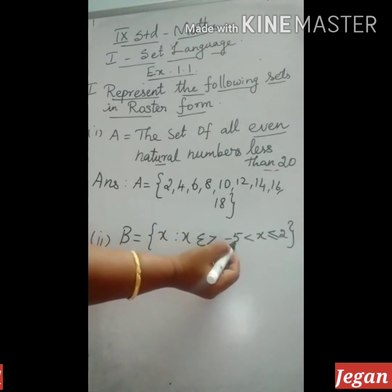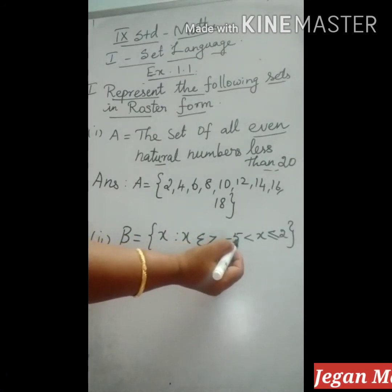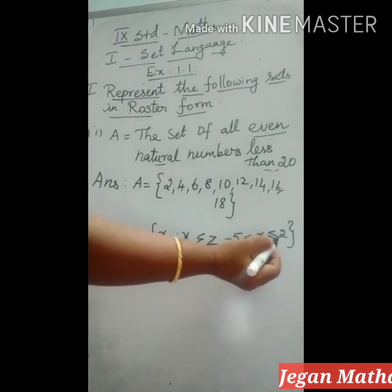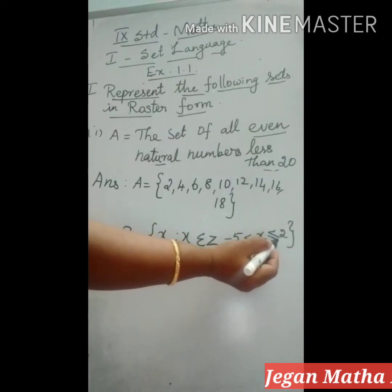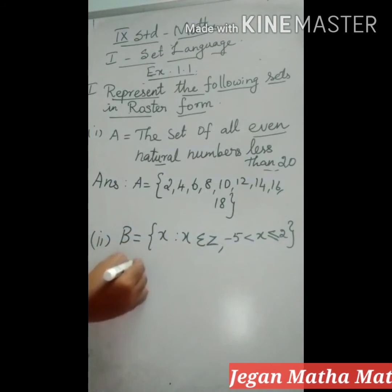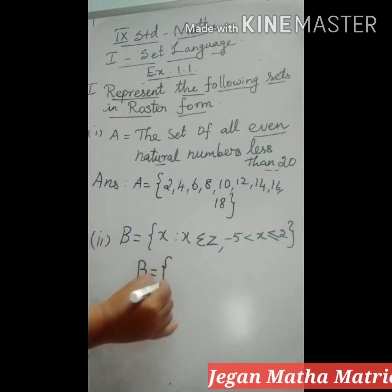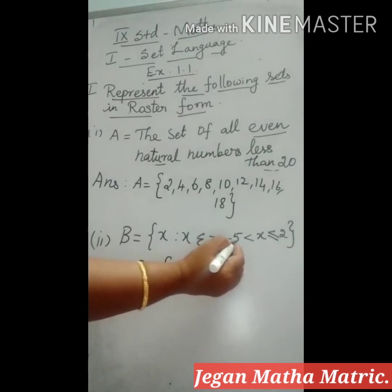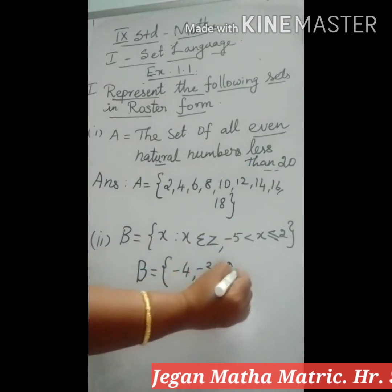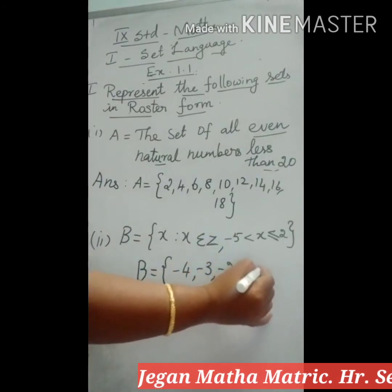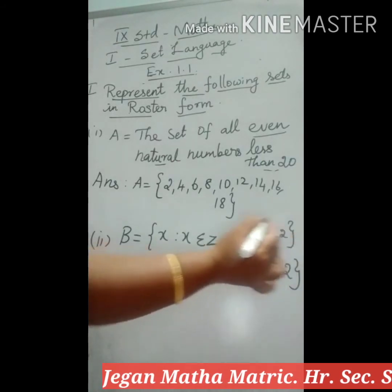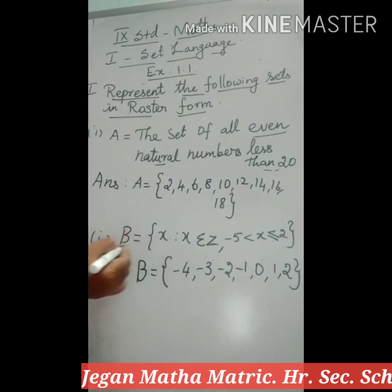Another condition is minus 5 less than X, so after -5 you start from -4. And less than or equal to 2, so you go up to 2. So B is equal to {-4, -3, -2, -1, 0, 1, 2}. Because less than or equal to 2, we include 1 and 2 also. This is the answer for the second question.